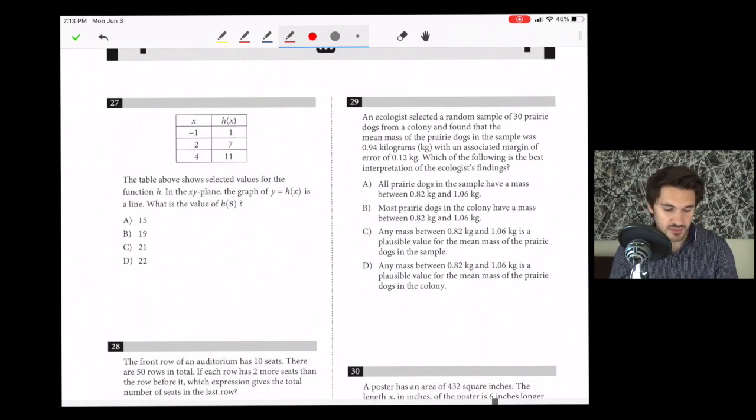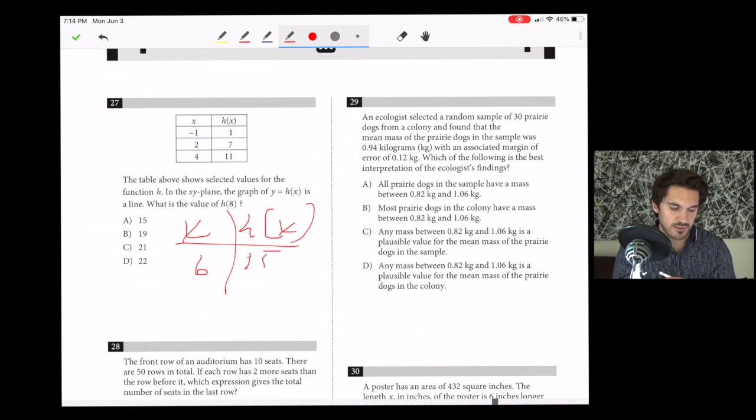Number 27. The table shows selected values for function h. In the xy-plane, the graph of y equals h(x) is a line. What is h(8)? Is this linear? It is linear. So we can figure out what h(8) should be. When we go from 2 to 4, h(x) goes from 7 to 11. So for an increase of 2 in x, h(x) increased by 4. If we increase by 2 again, at x equals 6, h will be 15. If x equals 8, it will be 19. So B is the answer.